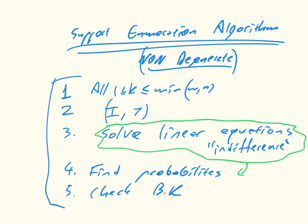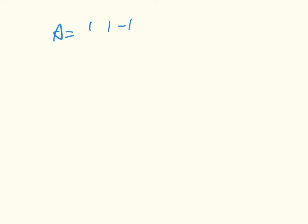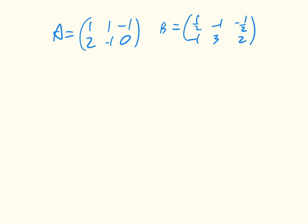Now I'll go through an example on a simple game. The row utility matrix A is [1, 1; -1, 2; -1, 0] and the column utility matrix B is [1/2, -1; -1/2, -1; 3, 2]. The first step involves supports of size one, which are just pure strategies — straightforward to handle by underlining, so we won't use the support enumeration algorithm for those.